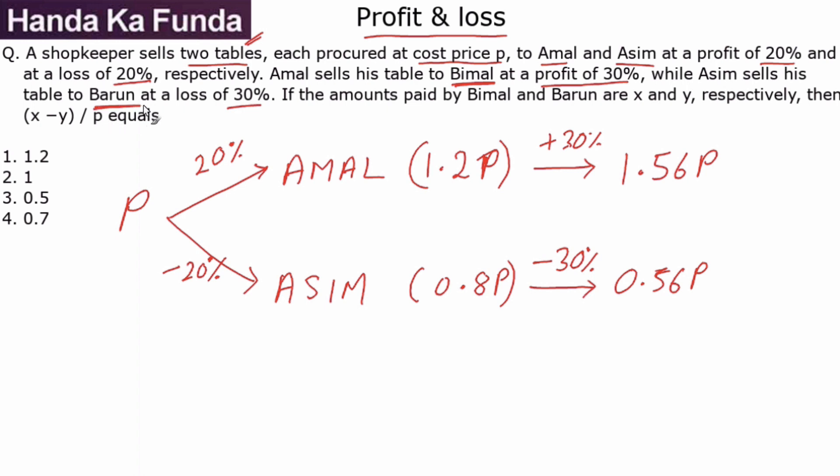Now we are given that the amounts paid by Bimal and Barun are x and y. What is the amount paid by Bimal? 1.56p, which is x. What is the amount paid by Barun? That is y, which is 0.56p.